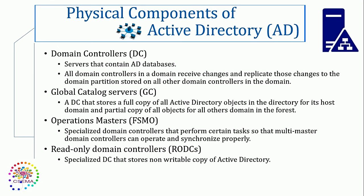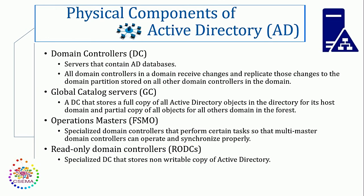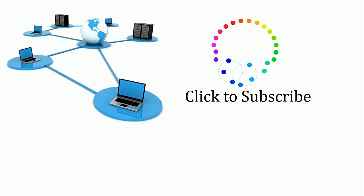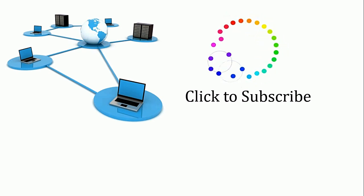Next we have operations masters, also called FSMO role holders. It is basically a specialized domain controller that performs certain tasks so that multi-master domain controllers can operate and synchronize properly. Read-only domain controllers are intended for use in branch offices and servers in a low physical security environment, and hold only a non-writable copy of Active Directory. This is all we have covered — what is Active Directory and what are the components of AD. Thank you so much for watching.